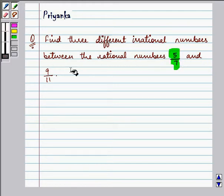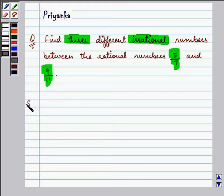So we need to find it between 5 by 7 and 9 by 11, three different irrational numbers. So let us start with our solution.